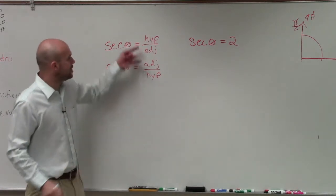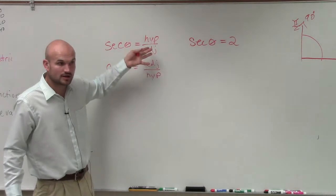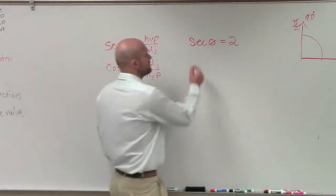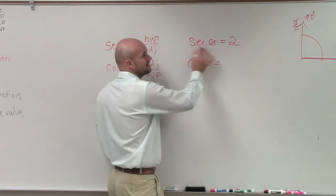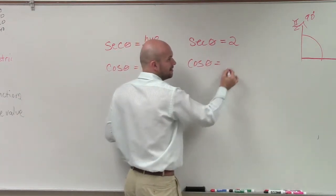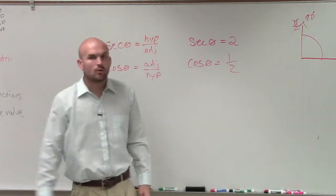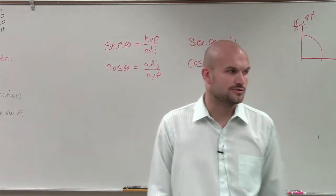So what do you know about the value of cosine compared to the value of secant? They're switched. They're called reciprocals. So therefore, if I said, what is the cosine of theta? If theta gives you secant, if theta gives you 2, the cosine of theta would give you 1/2.